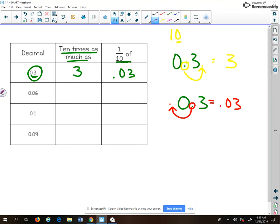So same thing now, we have 6 hundredths here. 10 times as much means we're getting bigger and we're moving the decimal one place to the right and it's going to be 6 tenths.